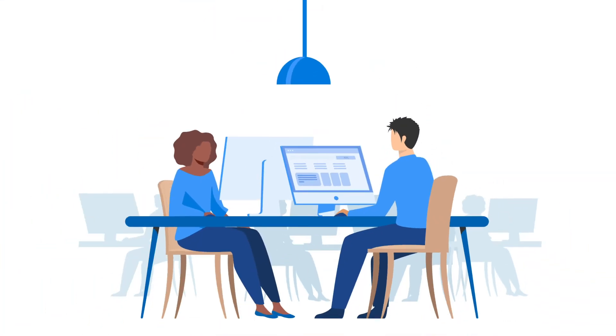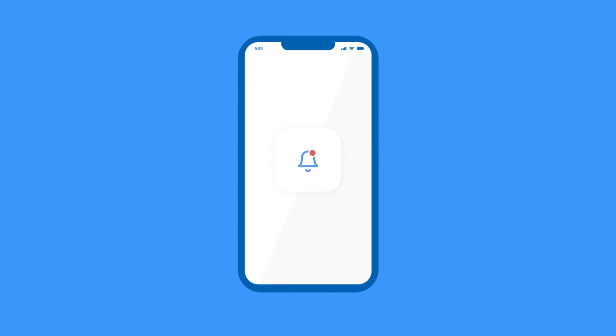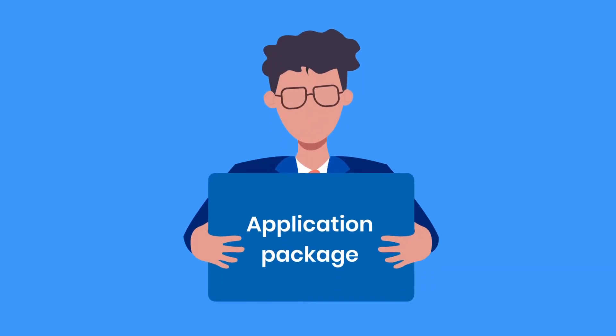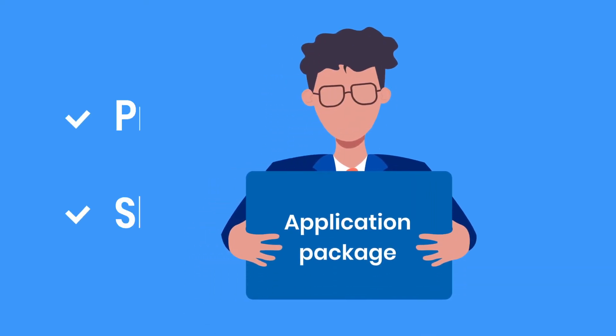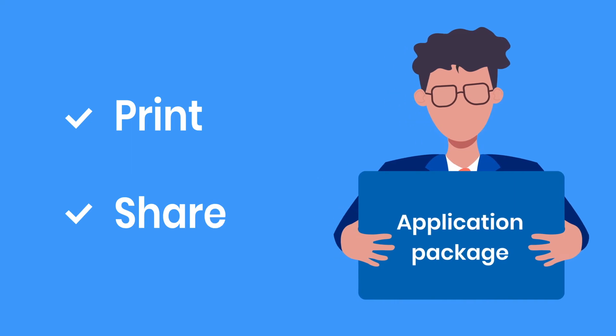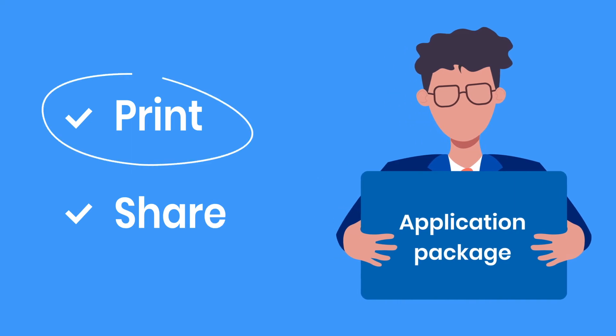Second, applicants can begin applying online. Each applicant will pay a $30 fee for the screening package on Rent Spree to submit. Finally, you'll receive a notification email each time an application has been submitted. You can then print or securely share the application package directly from Rent Spree.